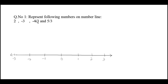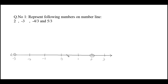The question is to represent the following numbers on a number line. To represent 2, it will be on the right-hand side of 0 — just mark a circle there, indicating 2 units from 0. To represent -3, it is a negative number so it lies on the left-hand side of 0, 3 units from 0. Just mark a circle over -3. This is a recap from what we studied in class 8.